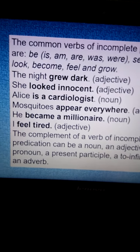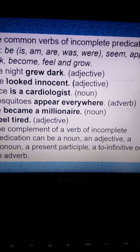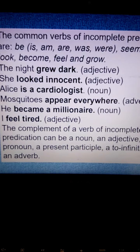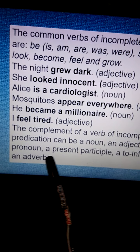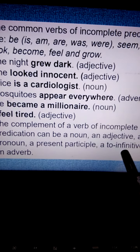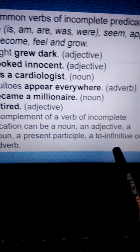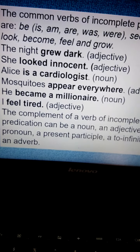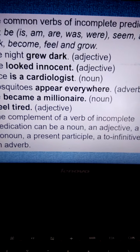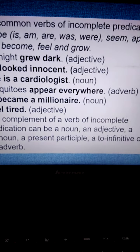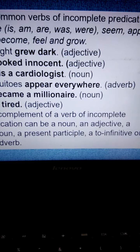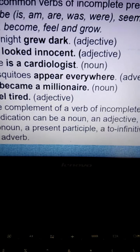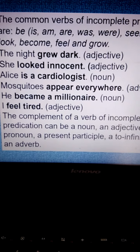These are the common verbs of incomplete predication. The complement of a verb of incomplete predication can be a noun, adjective, or pronoun, a present participle, a to-infinitive, or an adverb. So to complete a sentence with a verb of incomplete predication, we can use either an adjective, a noun, a pronoun, a present participle, a to-infinitive, or an adverb.